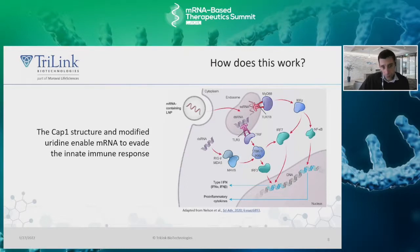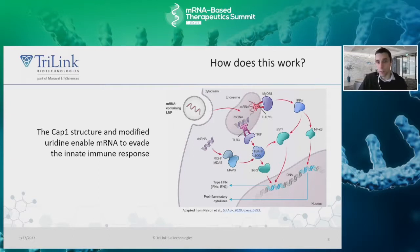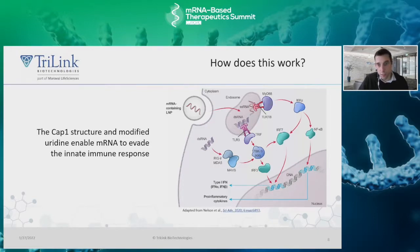Briefly, this figure sums up how well-designed mRNAs are able to avoid the intracellular roadblocks put up by the immune system. Cap-1 structure and modified uridine enable mRNA to evade the cell's innate immune response when delivered to the cell.